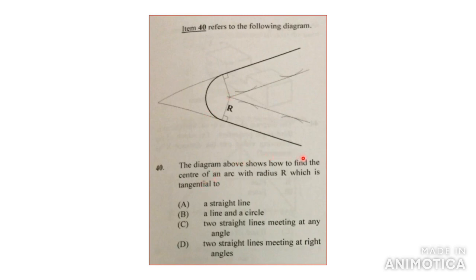The diagram above shows how to find the center of an arc with the radius R, which is tangential. So it basically asks me what is the circle tangential to. As you can see, the circle touches two lines which are meeting at any angle. They are not meeting at right angle.